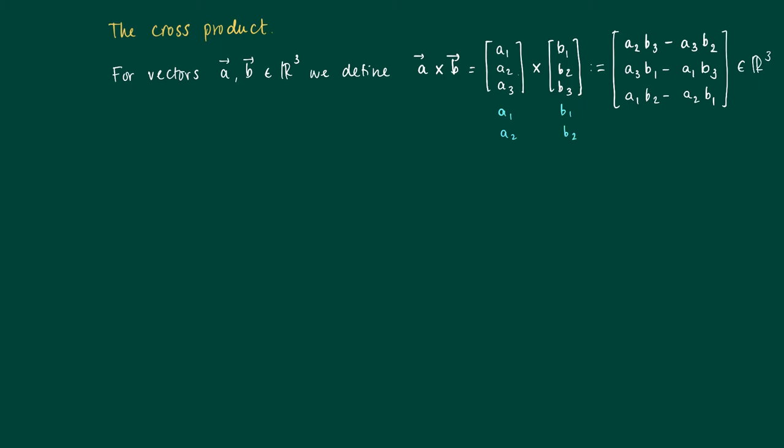So you see actually that in the first coordinate A1 is not present and B1 is not present. A2 is not present, B2 is not present, etc.